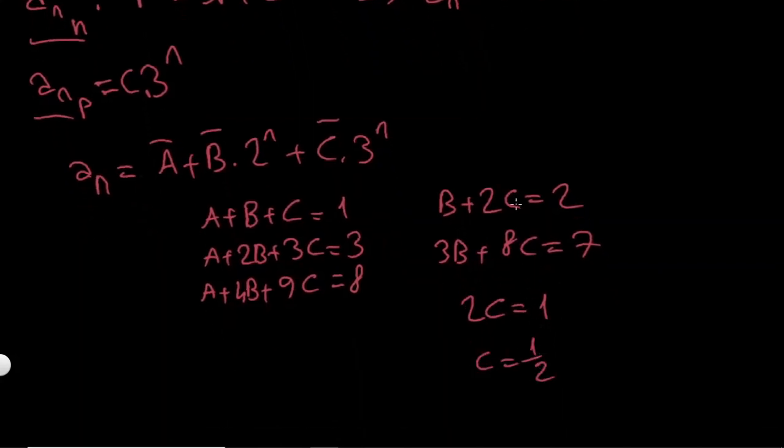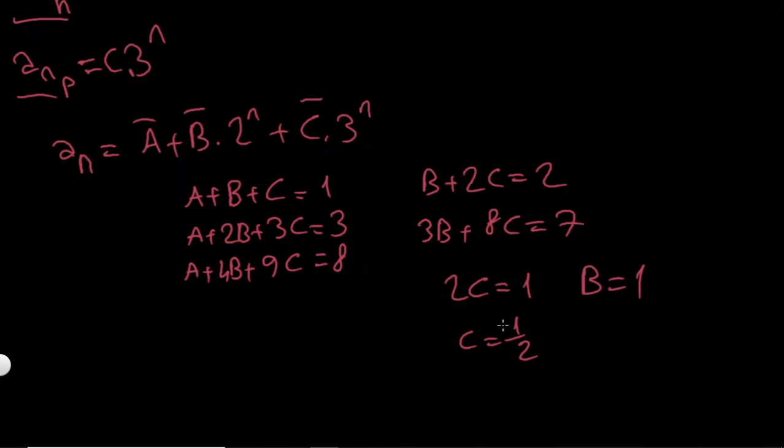So c is 1 over 2. And if I put 2C equals 1, I will get B equals 1. So I have B and C. And so if I just add these, I will get 3 over 2. So A should be minus 1 over 2.